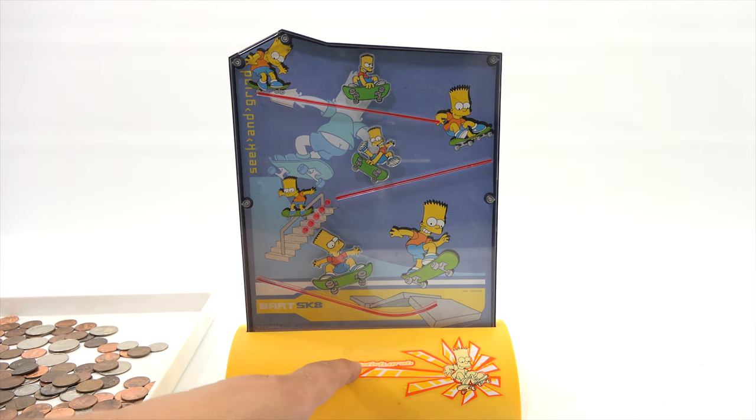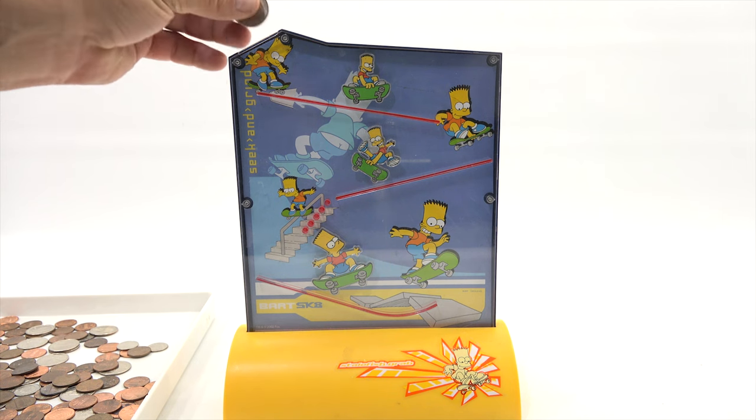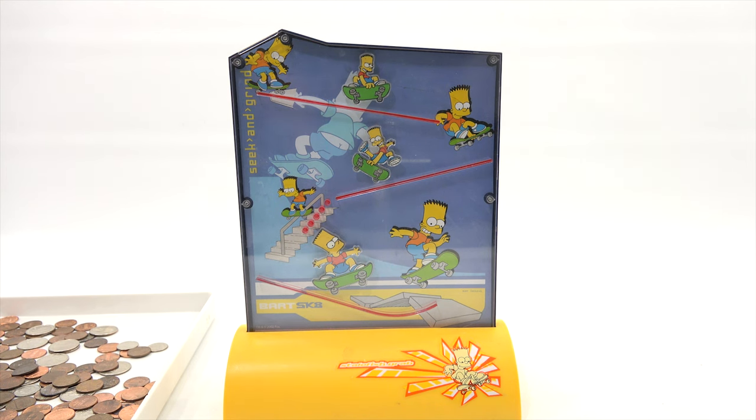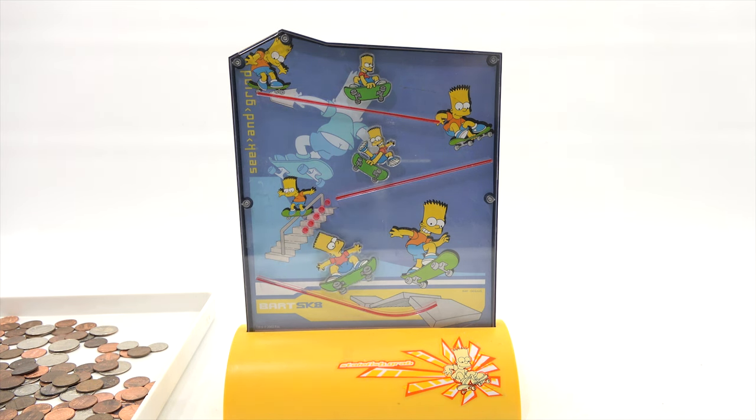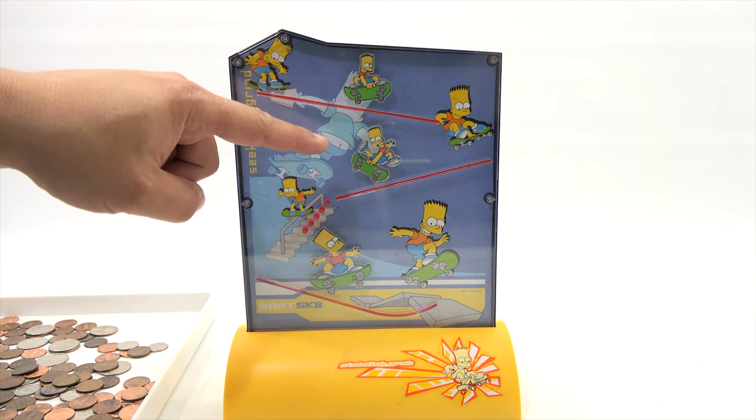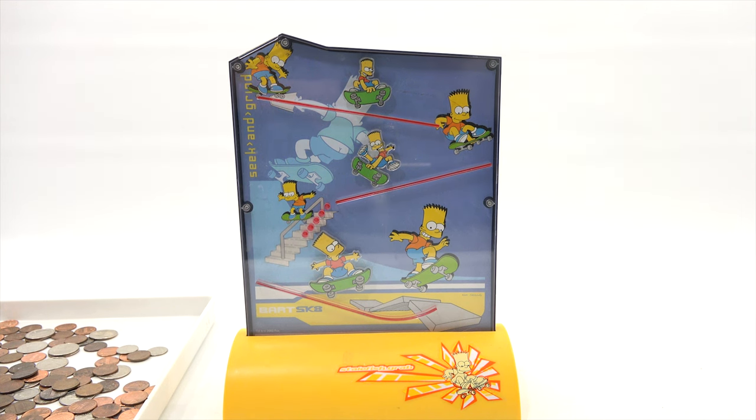And right here you got stalefish grab, I think that's what it says, S-T-A-L-E. That must be one of his own tricks, I have no idea. Skateboarders out there can tell me if that is a real trick, if I'm even reading it right. Now I just noticed that Bart Simpson has a little pant problem there. Let me zoom in a little closer.